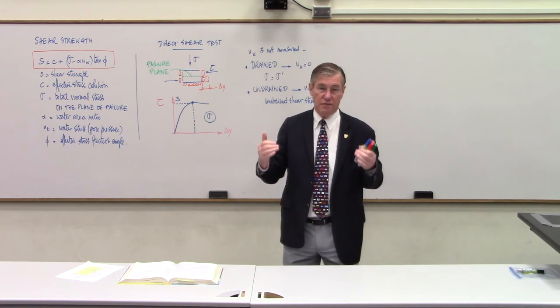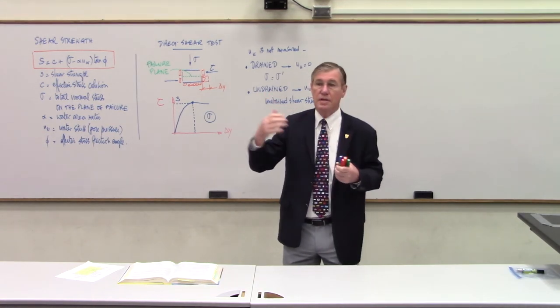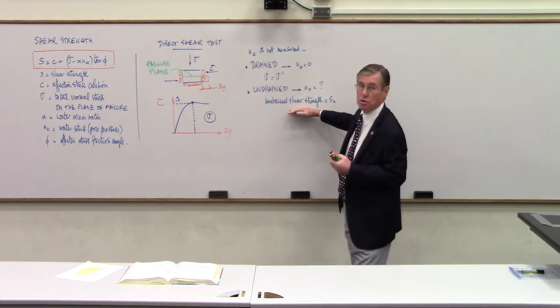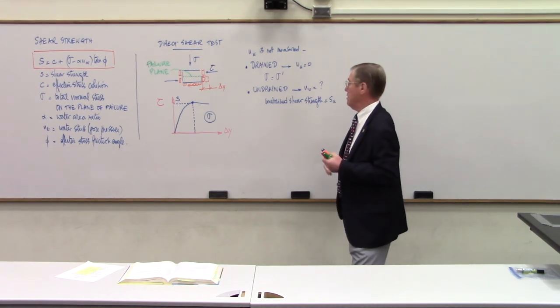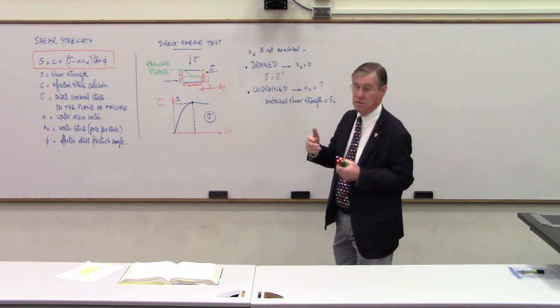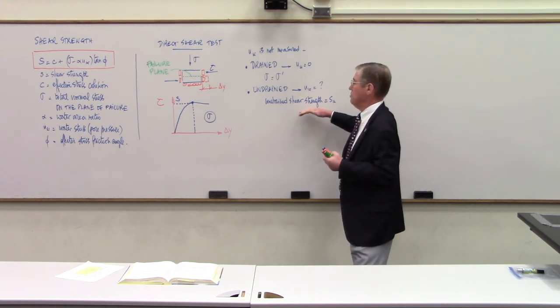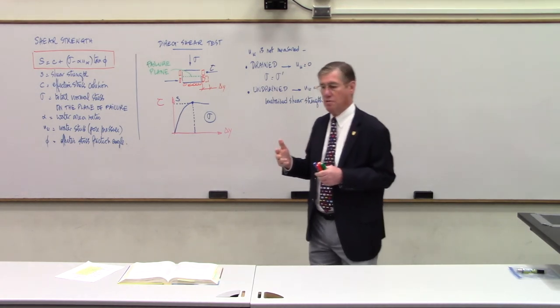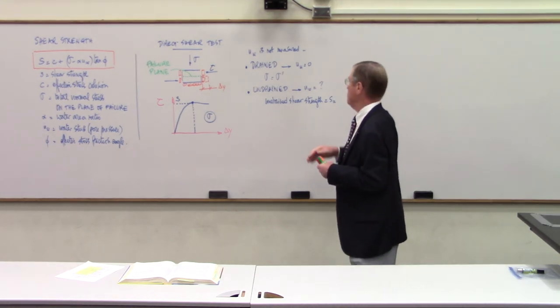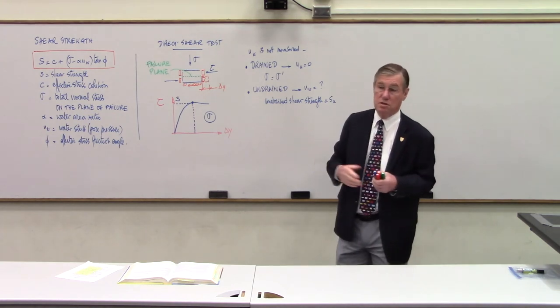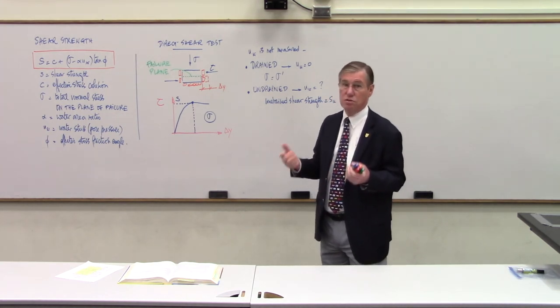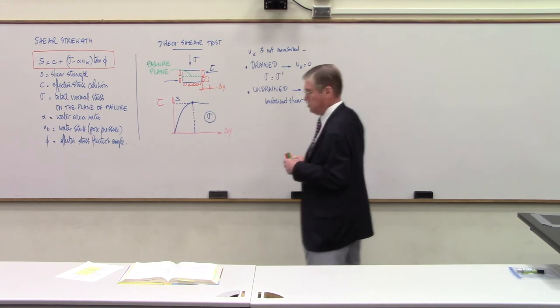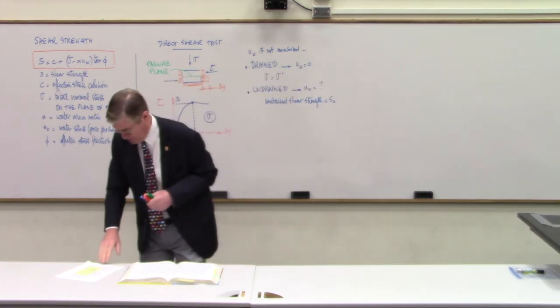As the water drains, the water pressure decreases, the effective stress increases, the strength increases. Things get better with time. So this undrained shear strength tends to control a number of things that we do when we design structures on silt and on clay. In sand and in gravel, the drainage is relatively fast. And if it takes one year to construct something, well, by the end of construction, you probably have drainage that's taken place, whereas drainage may take years in silts and clays, so that even at the end of construction, you still have some water pressure trapped in the pores. So these are the two different types of tests.